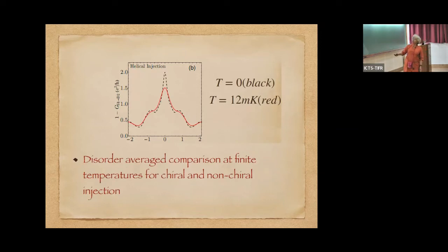And what we find is that because of the chiral injection, the disorder even at finite temperature - normally the point is disorder does not spoil the Majorana mode because it's a topological mode. But at finite temperatures, the height does come down. But with chiral injection, we find that the height does not come down, even at 12 millikelvin.